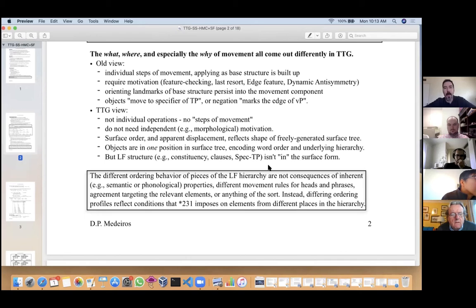It all comes out very differently here. In Tree Traversal Grammar, there are no individual operations of movement, no steps of movement, and therefore they don't need independent morphological motivation. The surface order, including all the apparent displacements, simply reflects the shape of the freely generated surface tree and how that distorts the underlying hierarchy. In the surface tree, objects are in a single position—there's no trace and movement to another position. They're in one position, and that position encodes at the same time word order and hierarchy, which are read from the tree by two different tree traversal algorithms: pre-order and post-order. The LF structure is built by the separate LF grammar; it isn't in the surface tree, so things like constituency, clauses, specifier of TP—those aren't properties of the surface form.